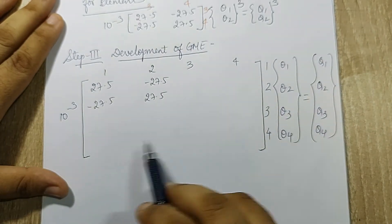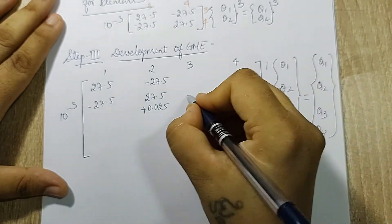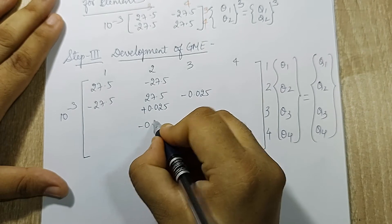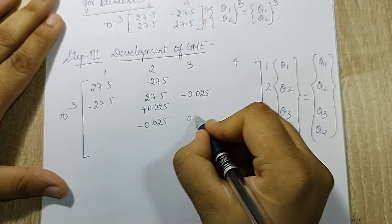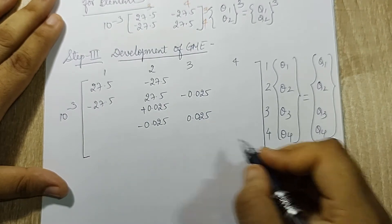Element 2 is between 2-3. This is very simple.